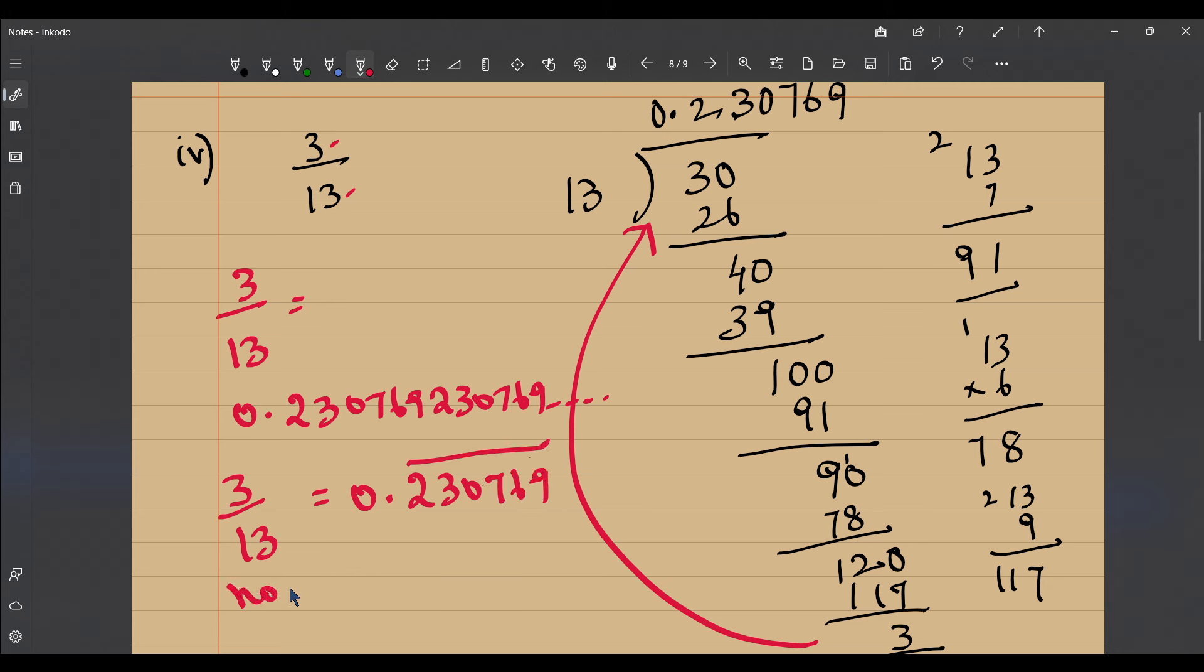This is a non-terminating recurring decimal. So we've shown you quite enough examples of how to go about dividing and find the decimal equivalent of rational numbers. I hope you followed, thank you.